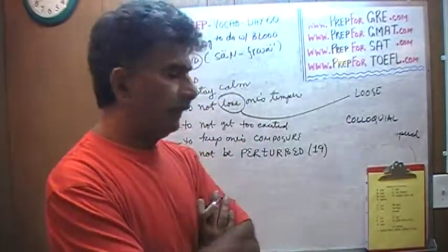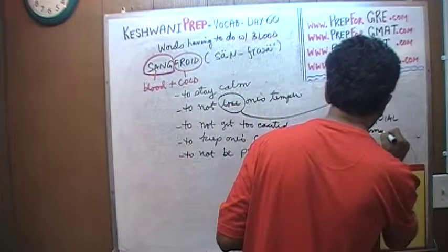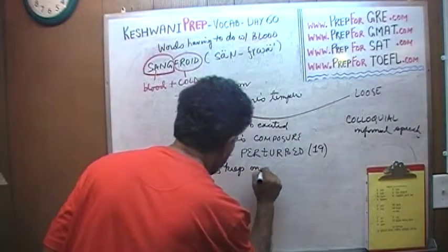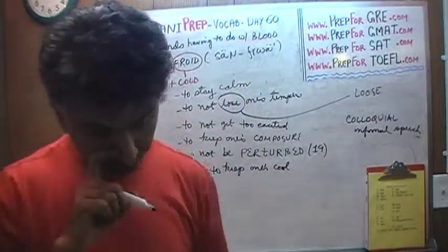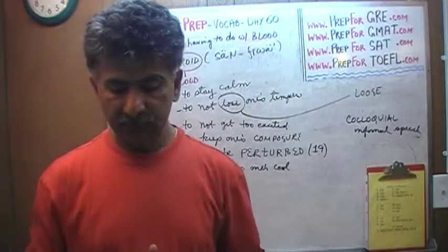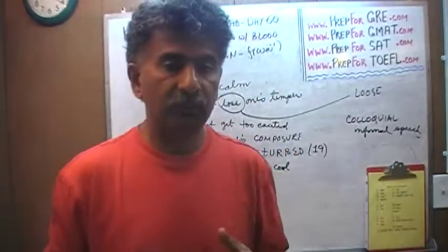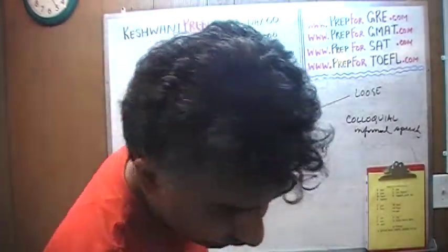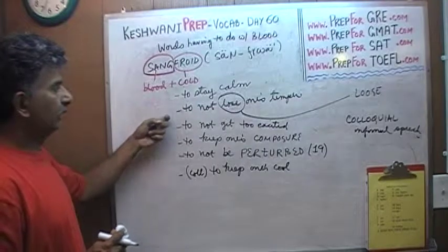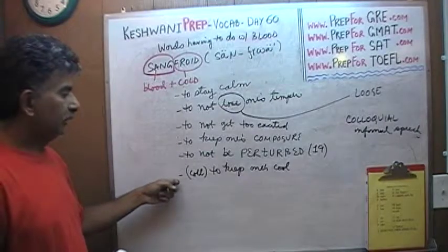'Perturbed' means to be disturbed — not calm, to lose one's temper, to be excited, to lose one's composure. So 'sang-froid' means you are not perturbed, you are remaining calm, you're keeping your cool. If you want to say it in colloquial terms — 'colloquial' means informal speech — 'to keep one's cool' means not to get too excited, not to lose one's temper. So: sang-froid — to stay calm, to not lose one's temper, to keep one's composure, to keep one's cool.